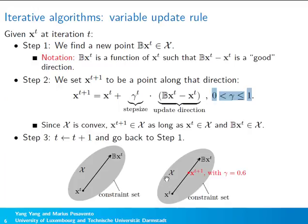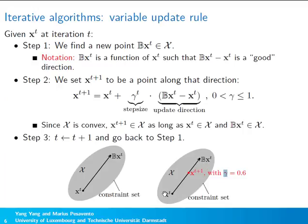Since the constraint set is convex, any point between x_t and bx_t is also in the constraint set, so x_{t+1} is always feasible. By varying gamma, we end up at different points between x_t and bx_t. When gamma equals 0 we stay at x_t, and when gamma equals 1 then bx_t becomes our next point. In this example, the step size gamma is 0.6.